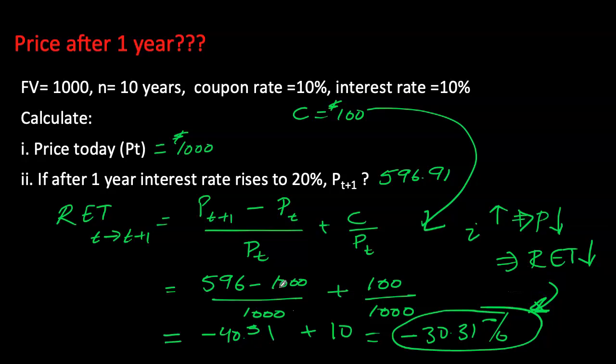The holding period return is becoming negative because of the negative rate of capital gain. Note that the current yield remains constant at 10% regardless of interest rate fluctuations, because the current yield is coming from my coupon payment as a percentage of my purchase price.